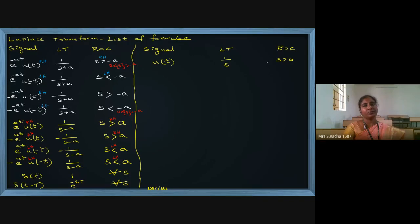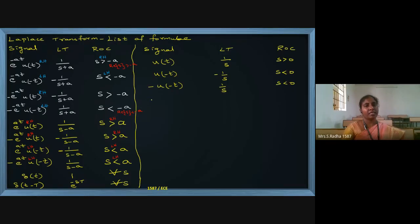For u(-t), you have minus 1 by s and ROC is s less than zero because it is a left-handed signal. For minus u(-t), you have plus 1 by s and ROC is s less than zero. For minus u(t), you have minus 1 by s and ROC is s greater than zero.